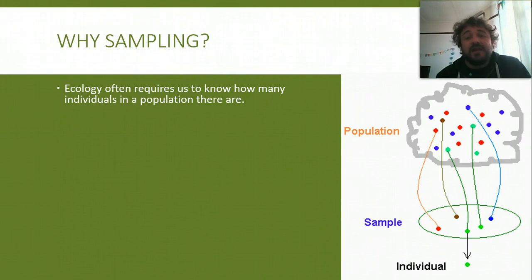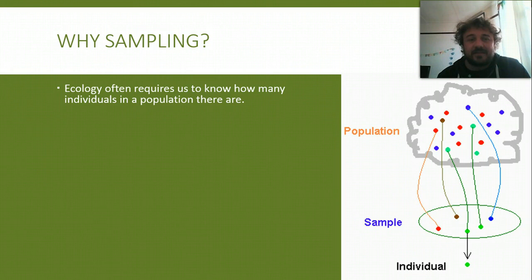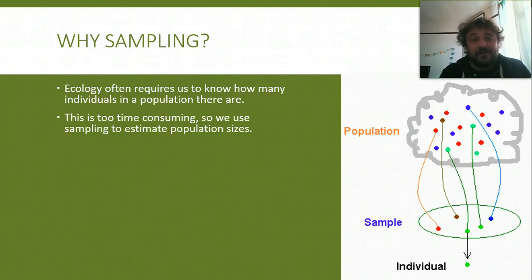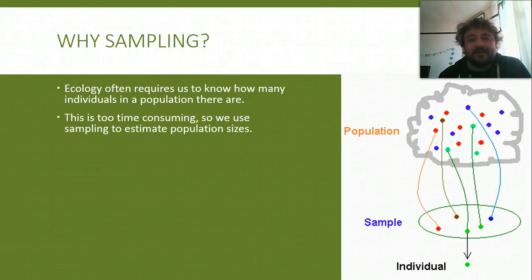Basically, why do we do it? Ecology requires us to know how many of everything there is. You need to know what makes up your community before you can really talk about it in too much detail. It's way too time-consuming to count every single one, or it's impossible, depending on what it is you're dealing with. So we use samples to estimate the size.